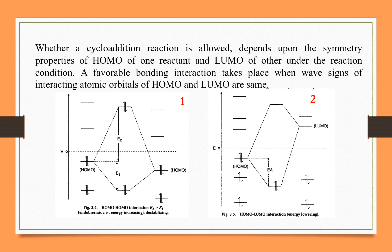In the second case, the HOMO of the first reactant interacts with the LUMO of the second reactant. The electrons are distributed in the lower energy levels in the product molecules, and in the ground state level. The molecule is therefore stable. In the first case, the energy is very high — the electron distribution energy will be very high — so the product will be unstable.